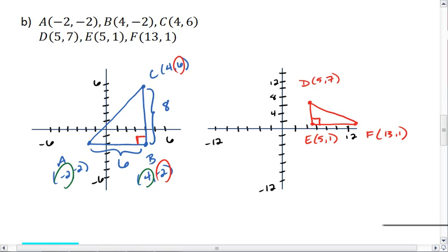For my red triangle, I can look at the y coordinates again, see that this is a size of 6, and that side is 8. This comes from 13 minus 5, and the 6 comes from 7 minus 1.